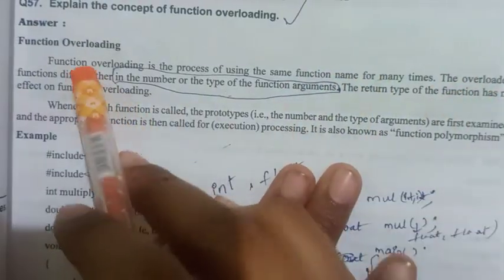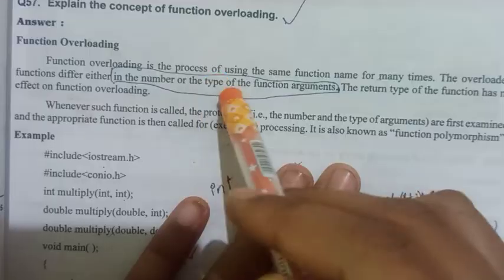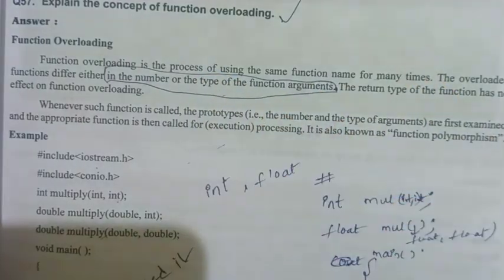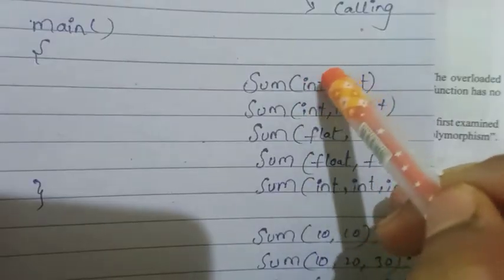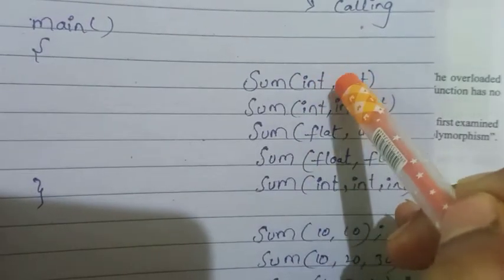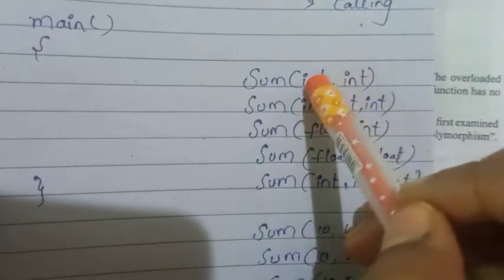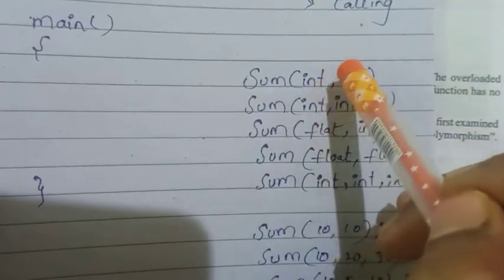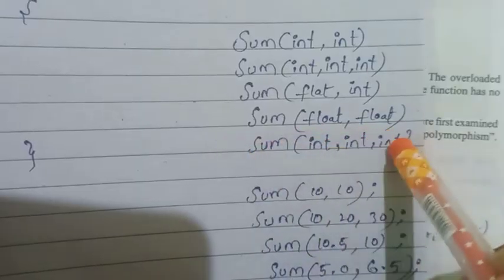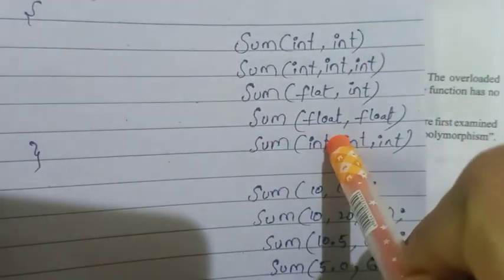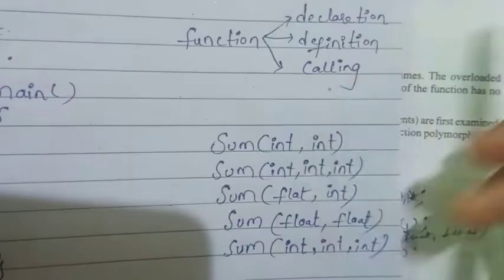Here, the overloaded functions differ either in the number or the type of function arguments. So if we use functions with the same name, that is okay — but the arguments must differ. If we use integer data type variables, we use a certain number of arguments, say two. If we use a different number, say three arguments, the number of arguments is different.